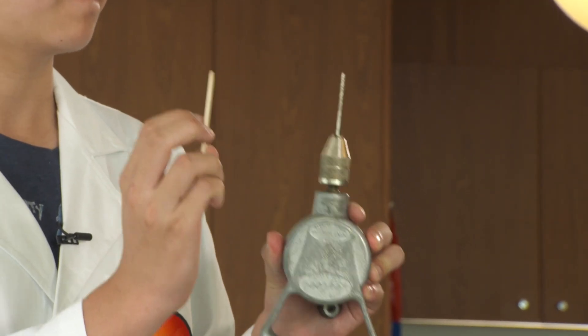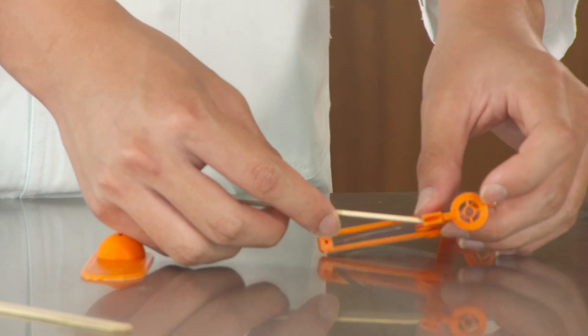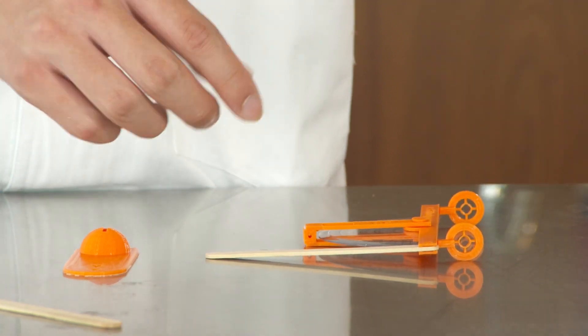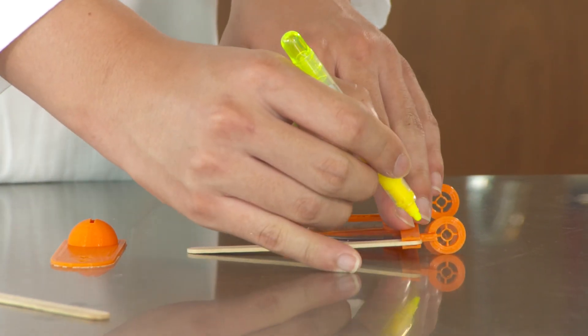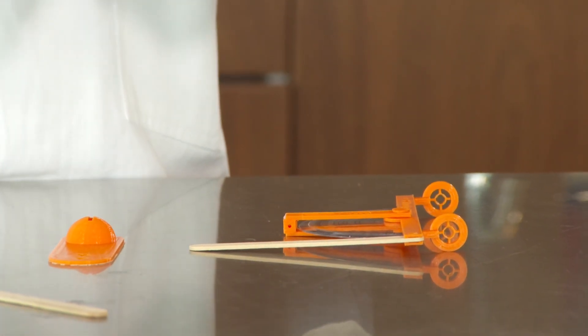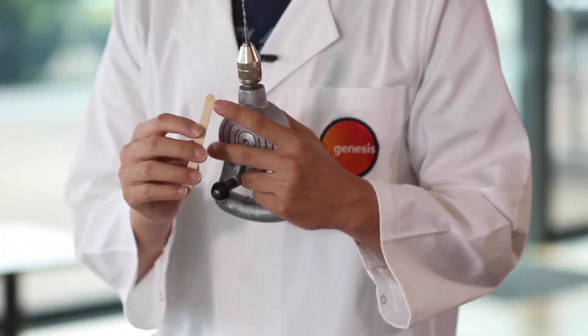You need to take a popsicle stick and drill a hole into it. To make it easier, you put it in like this. Then you take a highlighter and draw a dot on there, like so. After you've drawn a dot, you can drill a hole in it with a hand drill.